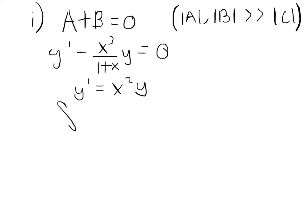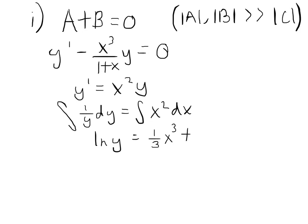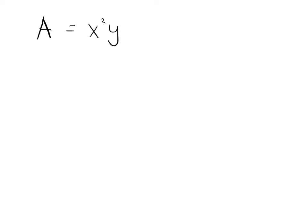We can solve this with separation of variables. So we have the integral of 1 over y dy equal to the integral of x squared dx. This gives ln y equal to one third x cubed plus a constant k. So y is equal to k times e to the one third x cubed. Now that we have solutions for y and y prime, we can plug these back into the original equation to find the values for A, B, and C. A is equal to x squared y, which we now know to be x squared e to the one third x cubed.